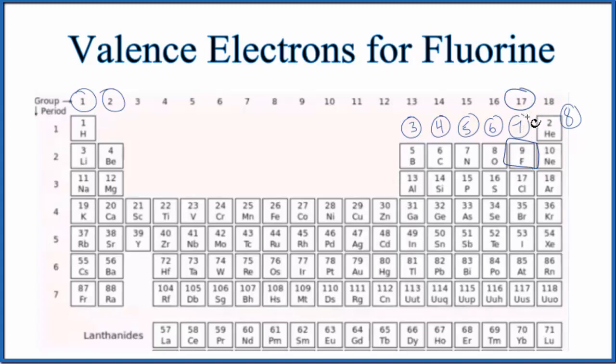Because of that, it has 7 valence electrons, just like chlorine or bromine or iodine. So these elements here, 7 valence electrons. Fluorine, it has 7 valence electrons.